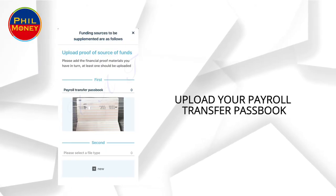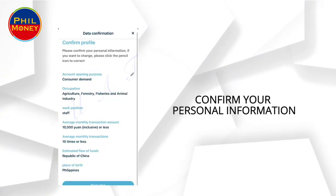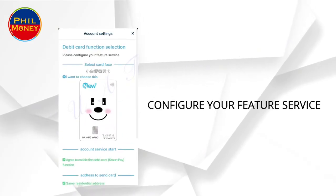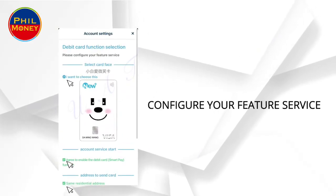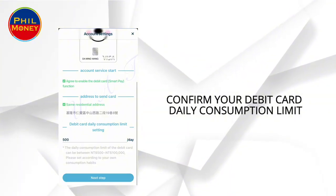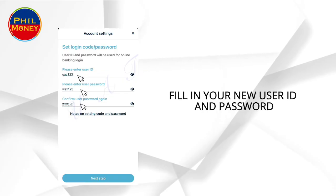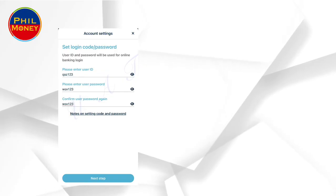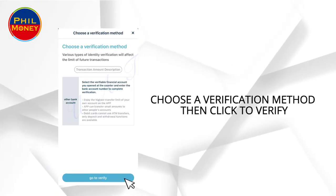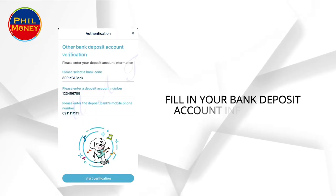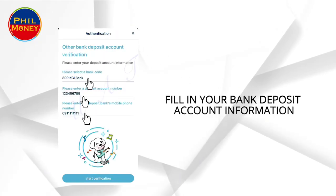Upload your payroll transfer passbook and confirm your personal information. Configure your feature service and confirm your debit card daily consumption limit. Fill in your new user ID and password, then choose a verification method and click to verify. Fill in your bank deposit account information.